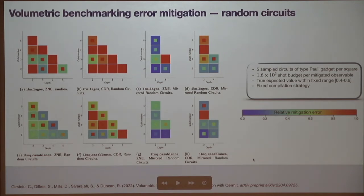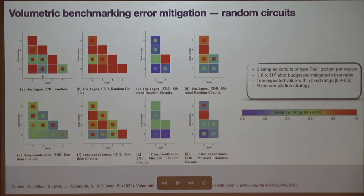Many of the circuits run on the top device failed to improve error mitigation. For example, looking at zero noise extrapolation in the top left: we were using a digitized method where noise scaling was done by identity-inserting gates. The noise profile of IBM Lagos is probably behaving quite differently than Casablanca in the sense that this noise scaling isn't doing what you would expect.